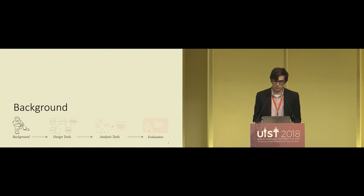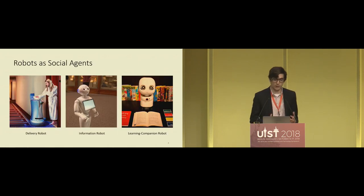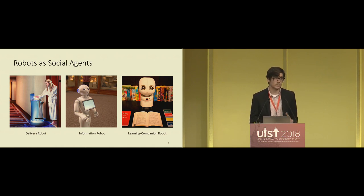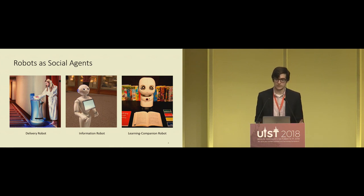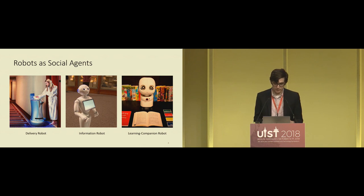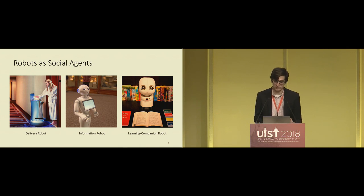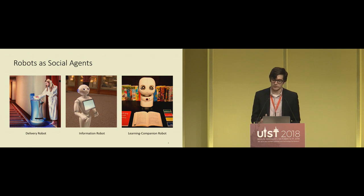What situations do we envision robots serving? Robots are social agents and they interact with people in a variety of contexts. They make deliveries to hotel guests, provide information to museum goers, and as an example of work done by one of my colleagues, they help children stay motivated to read. In each of these interactions, social norms are a large part of their success.